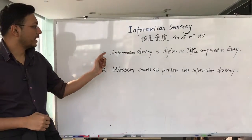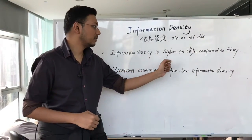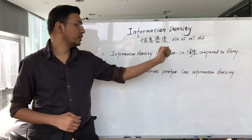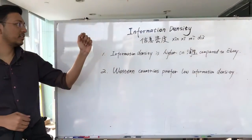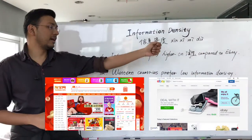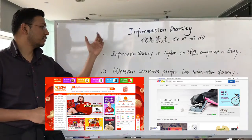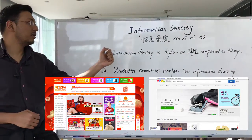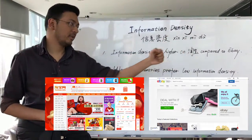For example, information density is higher on Taobao compared to eBay. If you look on the board you can see Taobao and eBay — there is so much information on Taobao, but on eBay there is very little information.